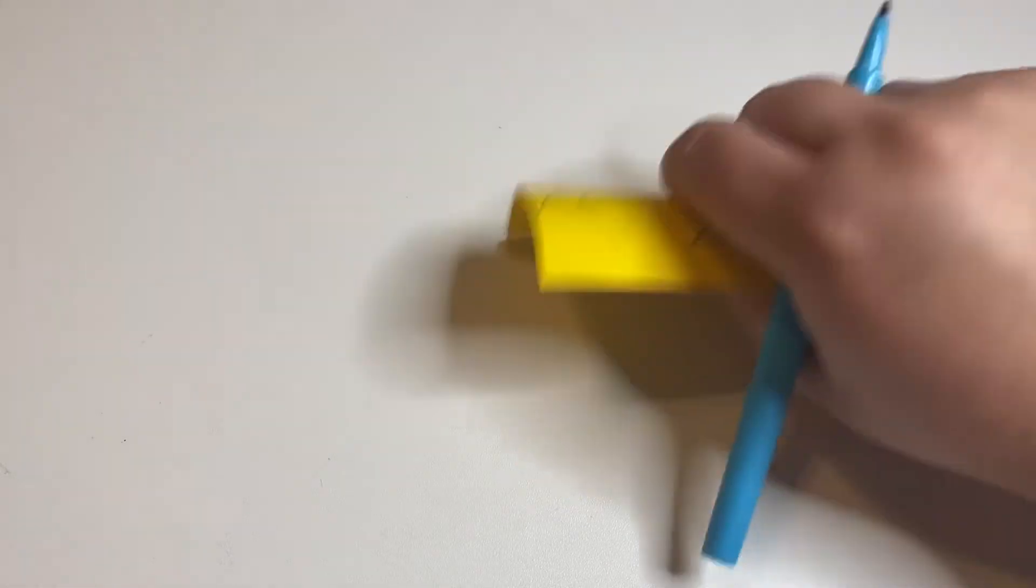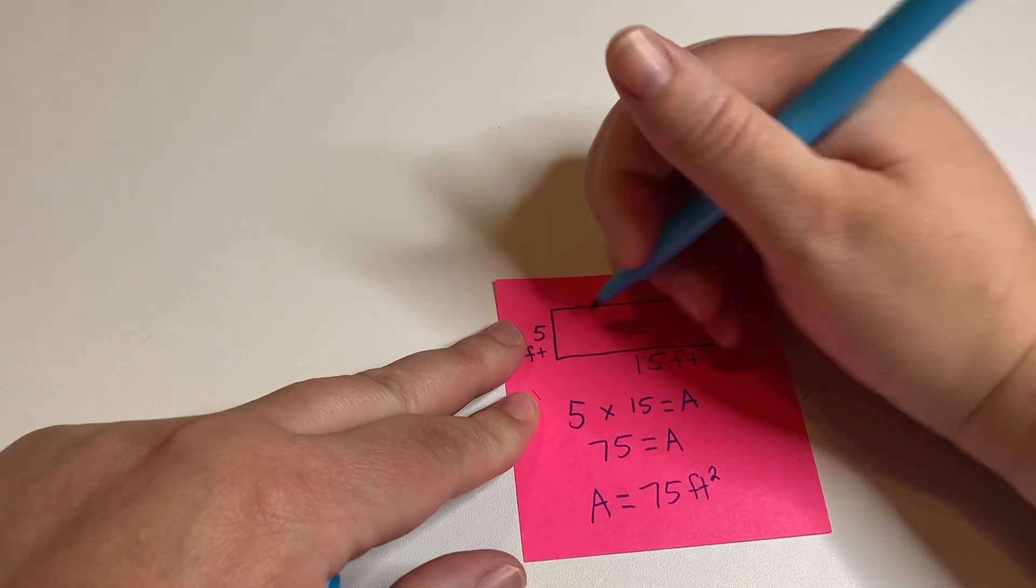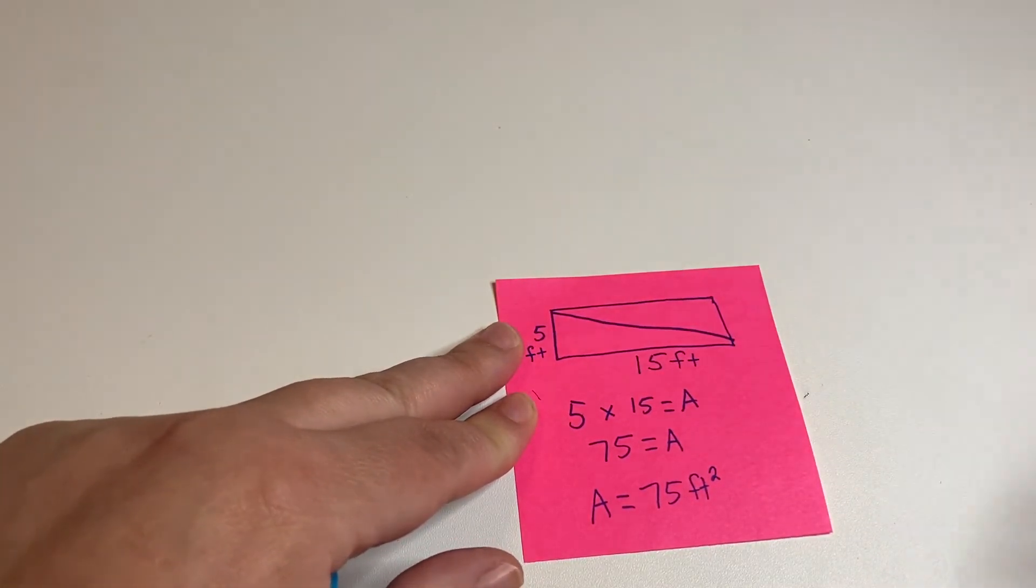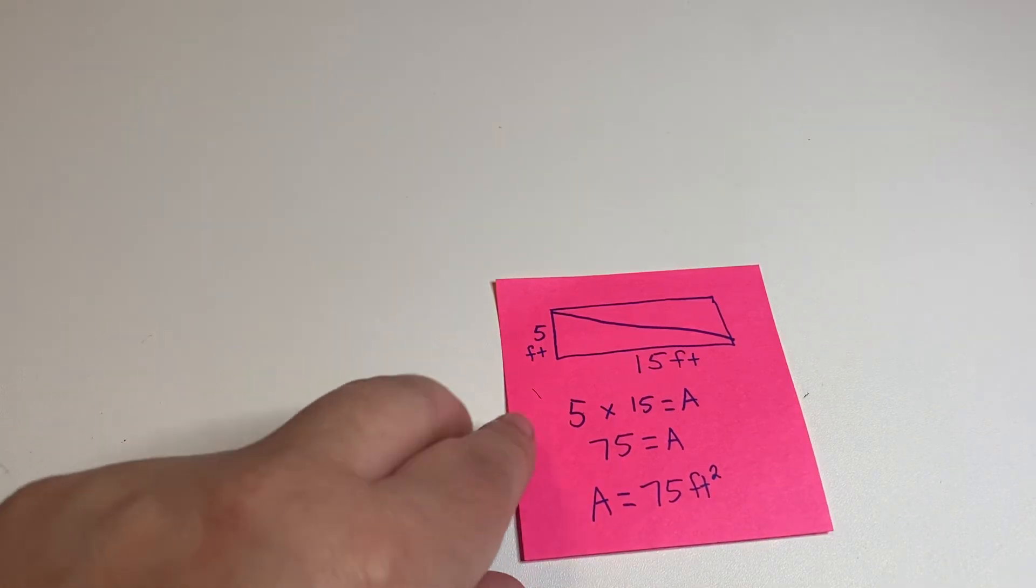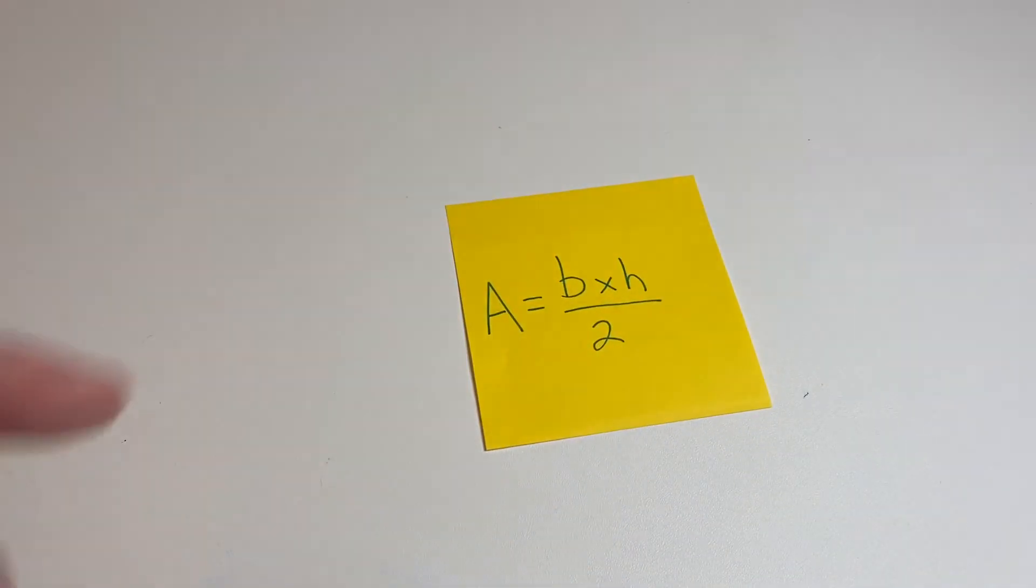And now let's do our last shape or figure, triangles. Okay, so remember, triangles are basically like cutting a square or a rectangle in half, right? If I have my rectangle here and I cut it in half diagonally, I'm going to get a triangle. Sorry, that wasn't perfect, but you get the idea.